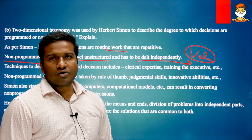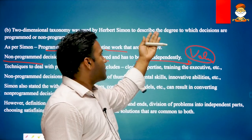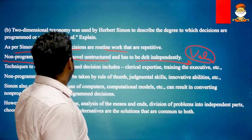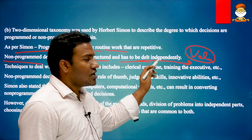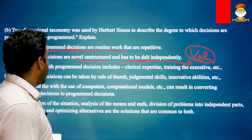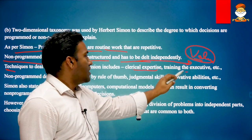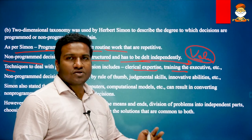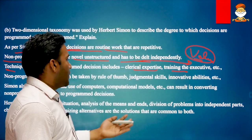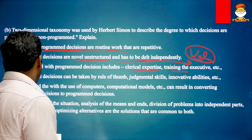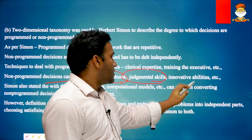For example, if you are starting a new company or new business, society, emotions, and family values come into picture. So Herbert Simon's taxonomy says: for programmed decision making it is factual, and almost all programmed decisions are factual in nature; non-programmed decisions involve various values. Techniques for programmed decisions include clerical expertise and training executives in movement of files, circulars, simple communications and coordination. Non-programmed decisions can be addressed through rule of thumb, value, judgmental skills, and innovative abilities.